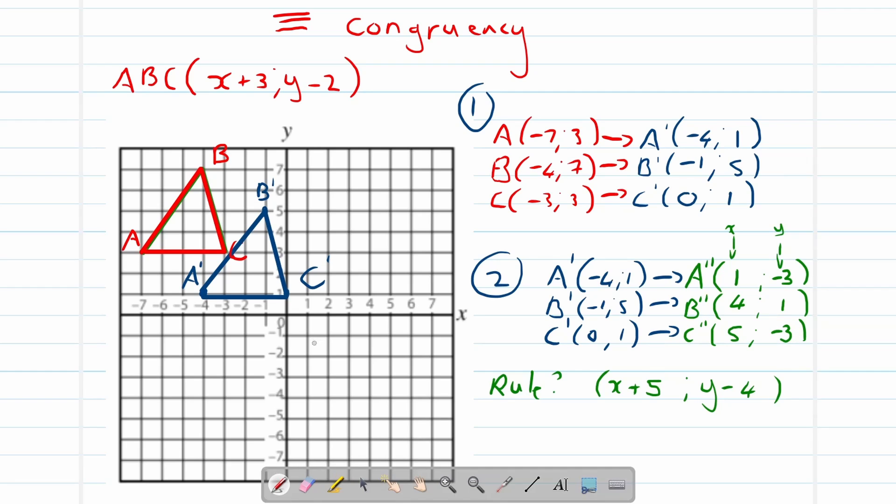So let's draw our new triangle. A double accent is at 1 and negative 3, right over there. B double accent is at 4 and 1, right over there. And C double accent is at 5 and negative 3, right over there. Let's draw our new triangle.